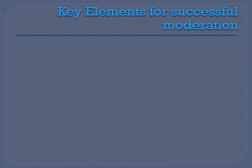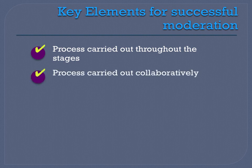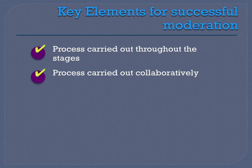What are the key elements that can make moderation successful, and even more importantly, effective? Moderation can be effective if the process is carried out from the planning and preparation stages through to the final assessment of the task — it must be seen as a process rather than a once-off task. It must also be carried out in a collaborative way, with teachers collaborating, feedback being exchanged, and open and transparent communication taking place among everyone involved.